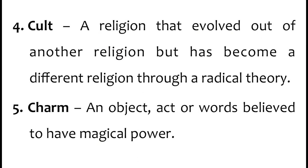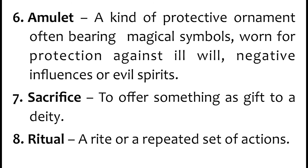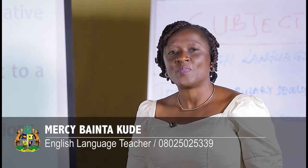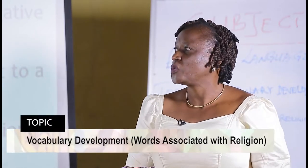Number five: charm. An object, act, or words believed to have magical power is called a charm. Number six: amulet. A kind of protective ornament, often bearing magical symbols, worn for protection against ill will, negative influences, or evil spirits is called an amulet. Number seven: sacrifice. To make a sacrifice under traditional religion means to offer something as a gift to a deity.